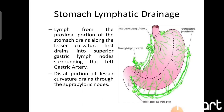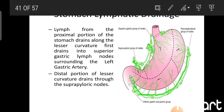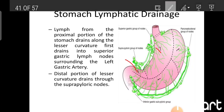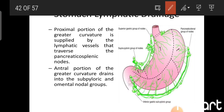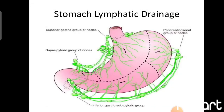The lymphatic drainage: lymph from the proximal half along the lesser curvature drains into the superior gastric group of lymph nodes. The distal portion along the lesser curvature drains into the suprapyloric group. The proximal portion of the greater curvature drains into the pancreaticosplenic group of lymph nodes, and the antral portion drains into the subpyloric and omental nodes.